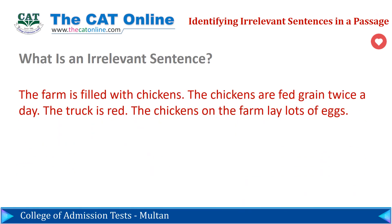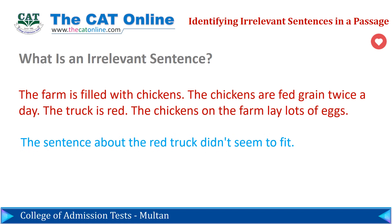The farm is filled with chickens. The chickens are fed grain twice a day. The truck is red. The chickens on the farm lay lots of eggs. Did anything stand out in the passage? Were you distracted or confused by any of the sentences? The sentence about the red truck didn't seem to fit, did it? The other sentences were about chickens — the last thing most readers would expect to see in a passage about chickens is a sentence telling us the truck is red.